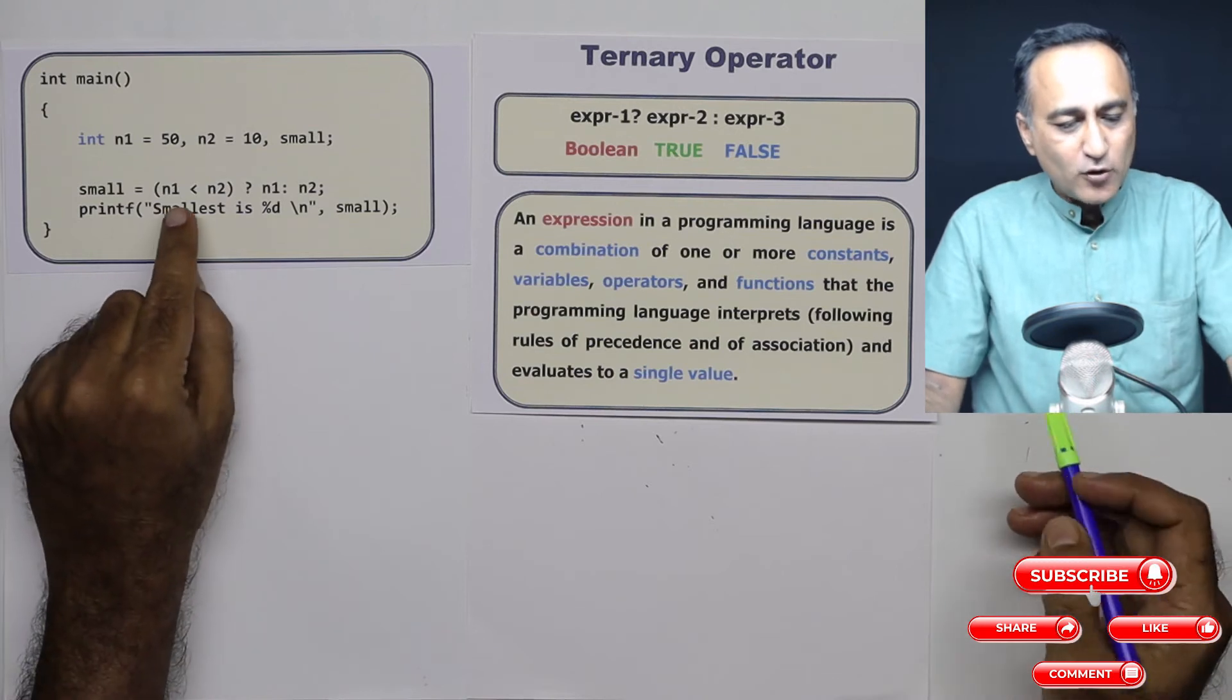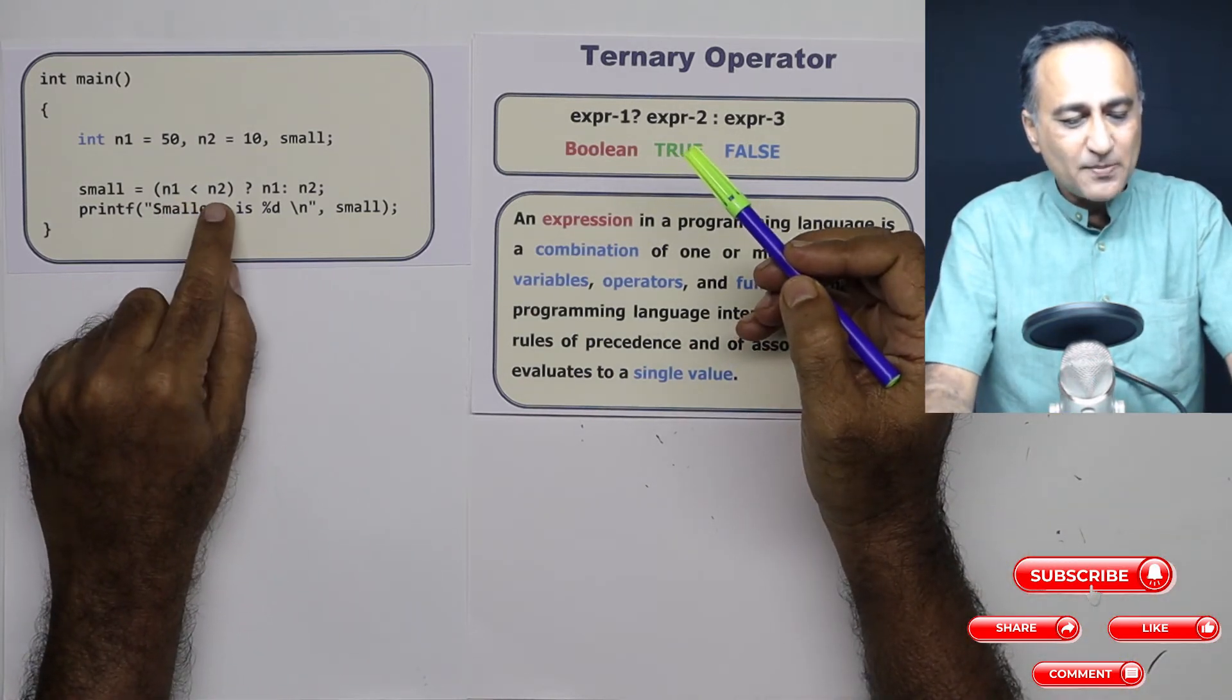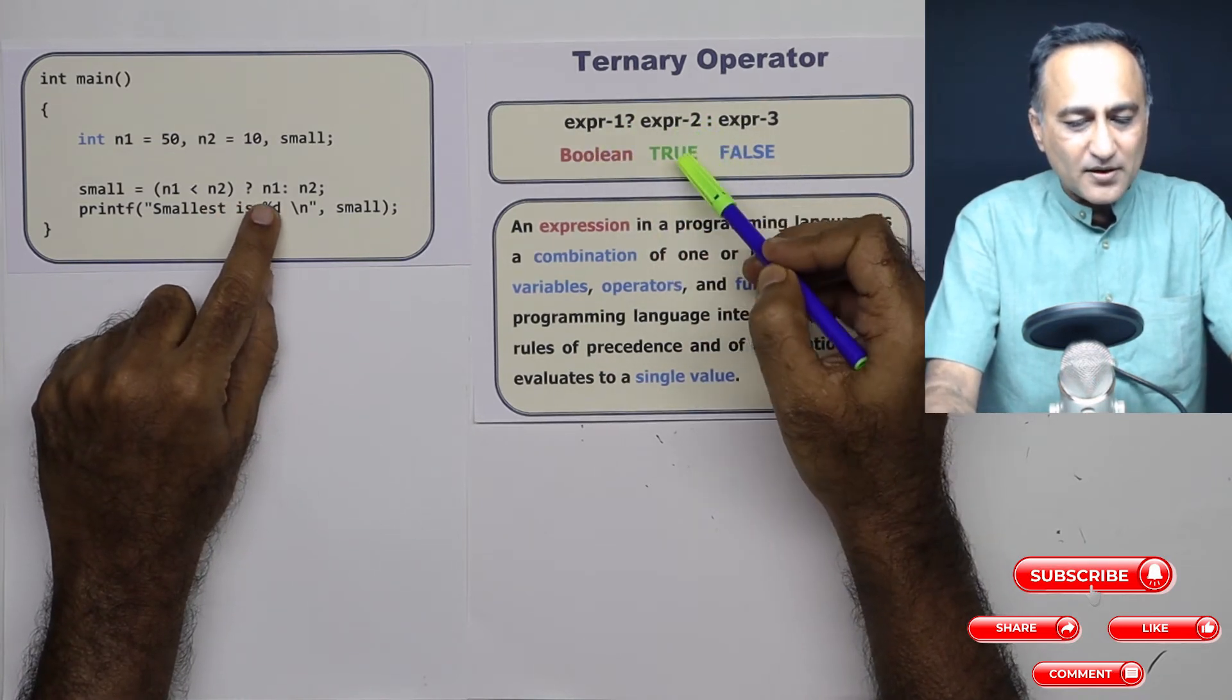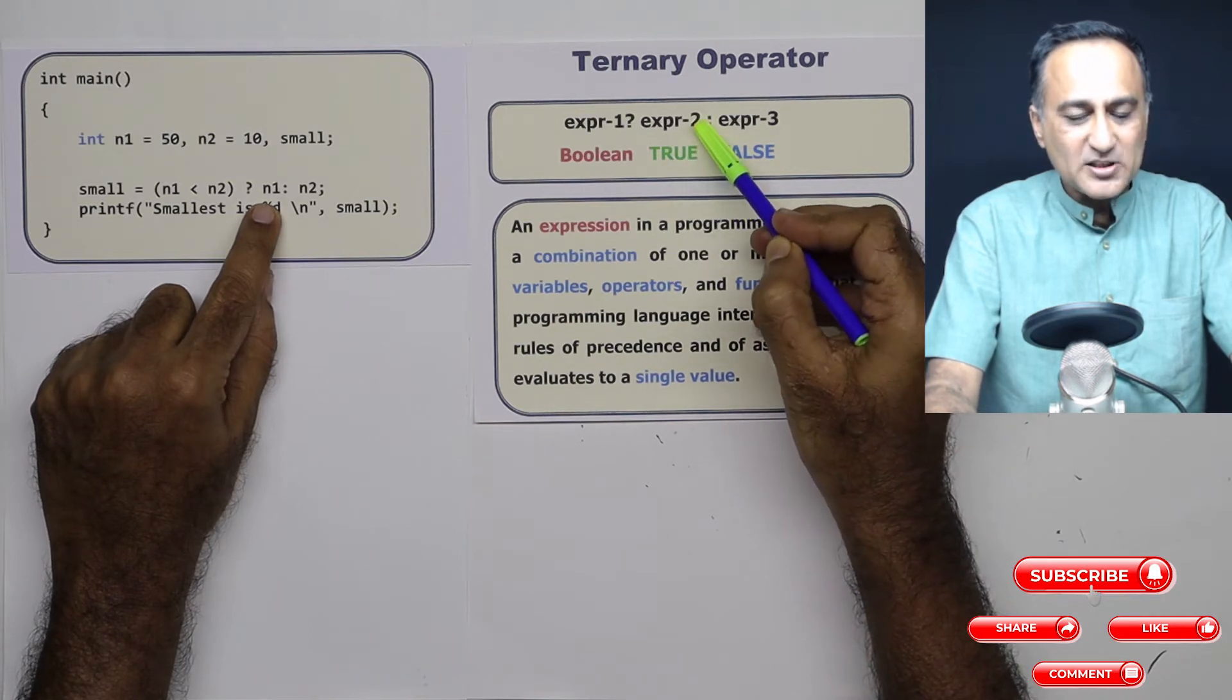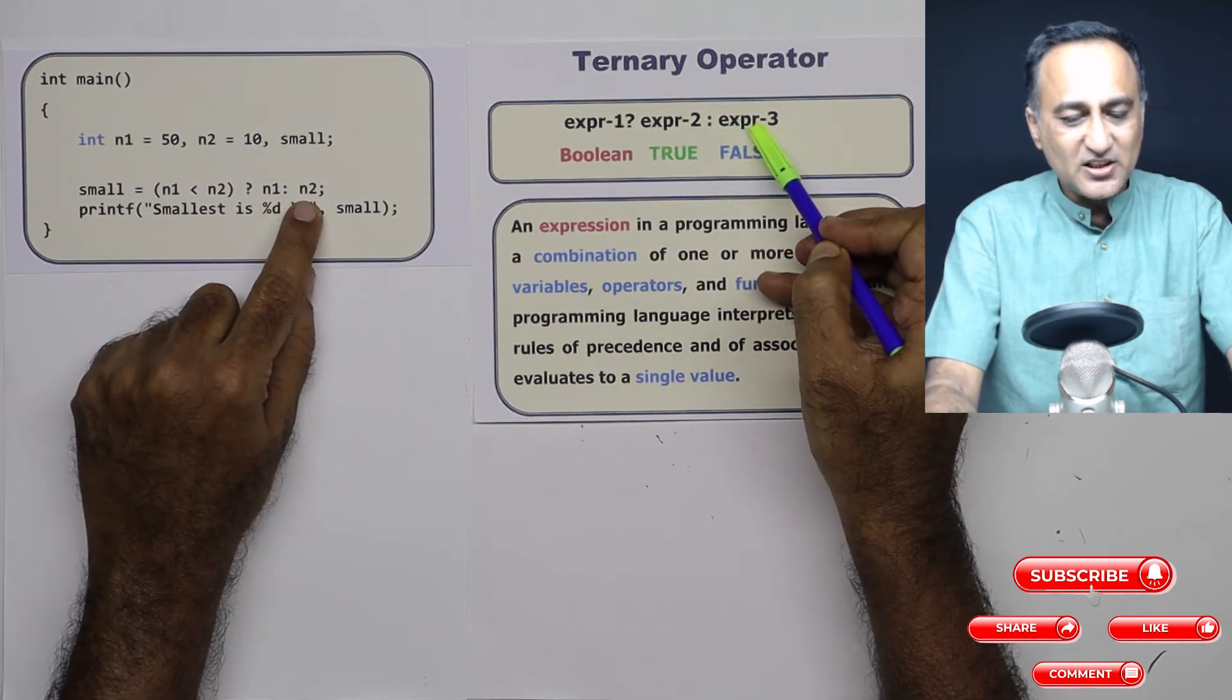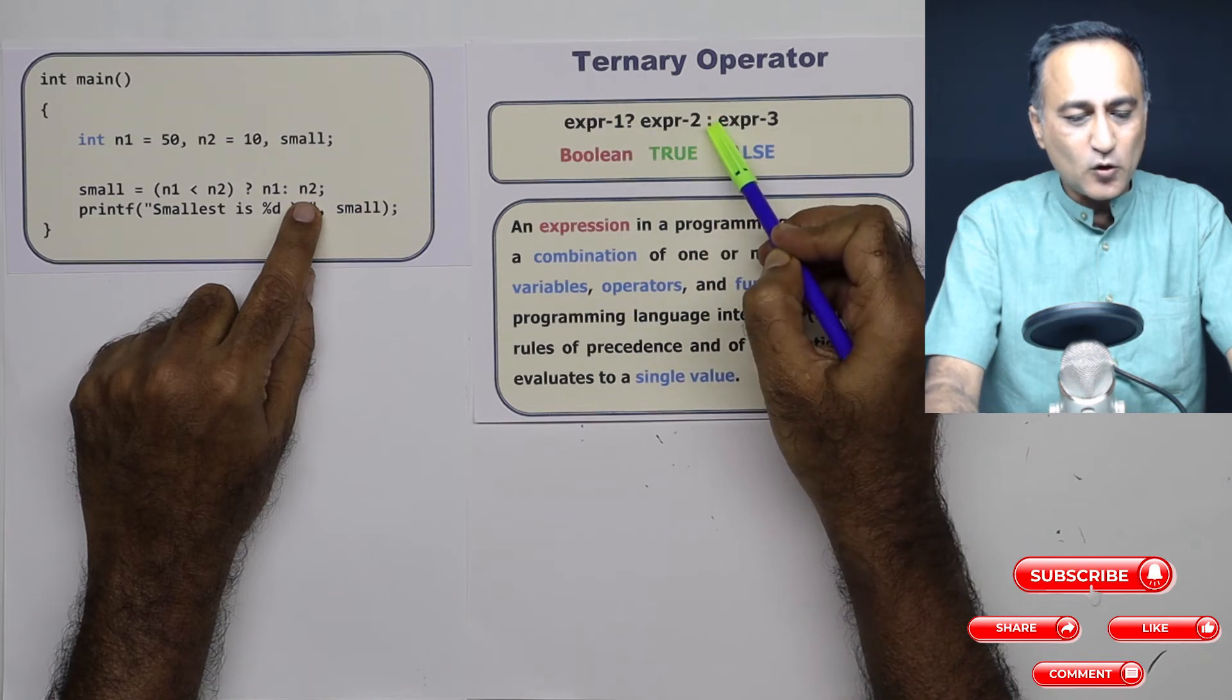Now if you look at all of these three components, n1 less than n2, which is in the bracket is the first expression, then n1, this is also an expression, this is the second expression, then n2, this is the third expression. Between the expressions, you have question mark and colon.